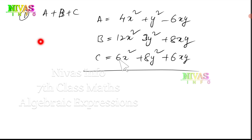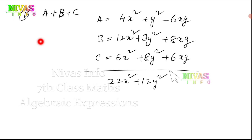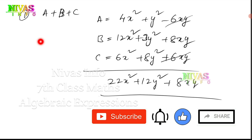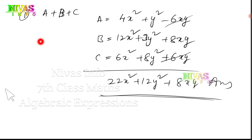For x²: 4 plus 12 is 16, plus 6 is 22 — so 22x². For y²: 1 plus 3 is 4, plus 8 is 12 — so 12y². For xy: negative 6 plus 8 plus 6: 8 plus 6 is 14, then 14 minus 6 gives 8xy. So the answer for the first problem is 22x² plus 12y² plus 8xy.